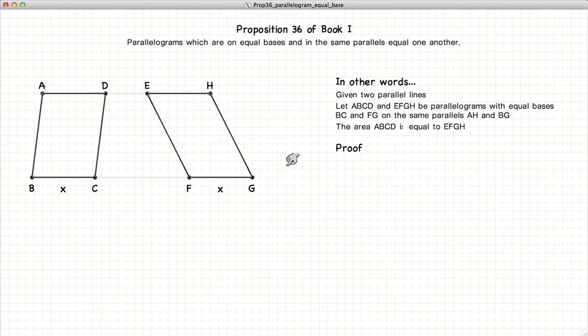So let's begin. We know that since EFGH is a parallelogram, then EH is equal to FG according to Proposition 34.